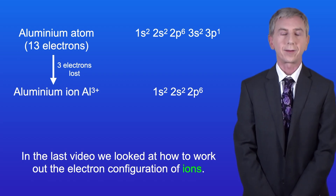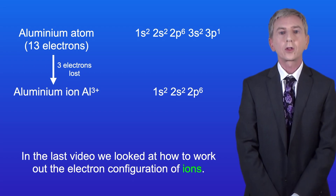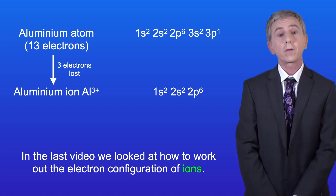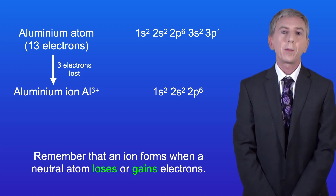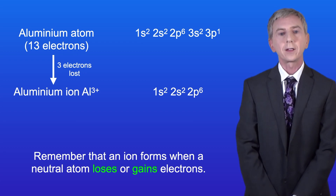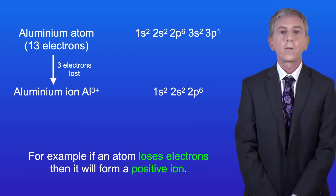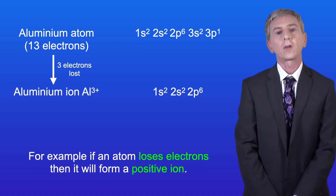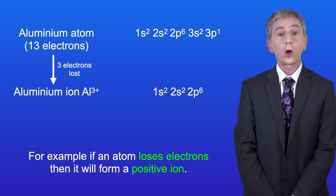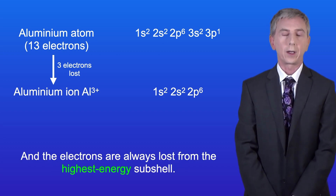Hi and welcome back to Free Science Lessons. In the last video we looked at how to work out the electron configuration of ions. Remember that an ion forms when a neutral atom loses or gains electrons. For example, if an atom loses electrons then it will form a positive ion, and the electrons are always lost from the highest energy subshell.